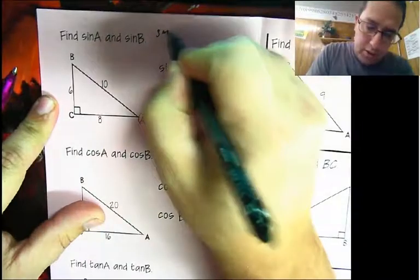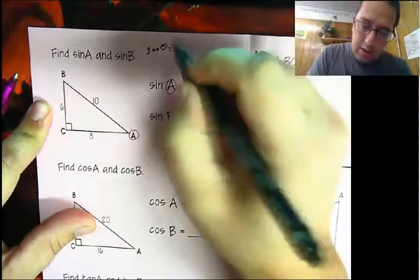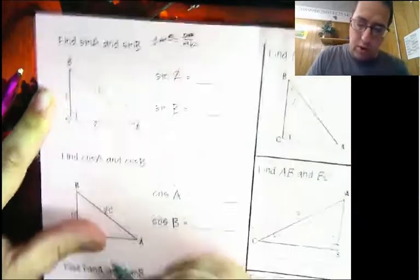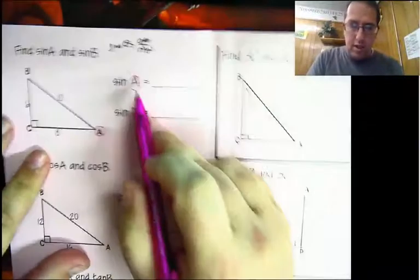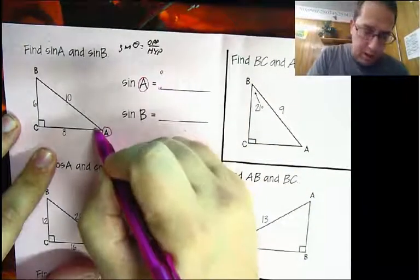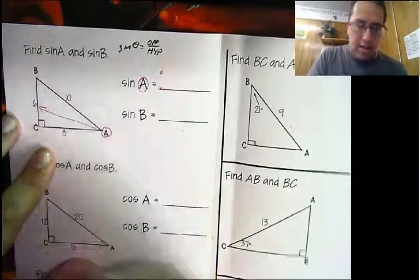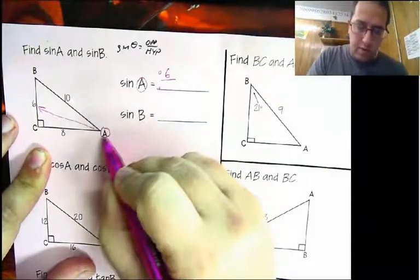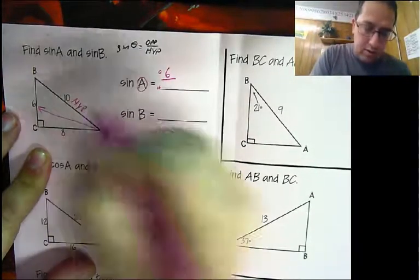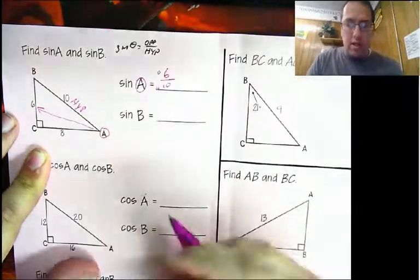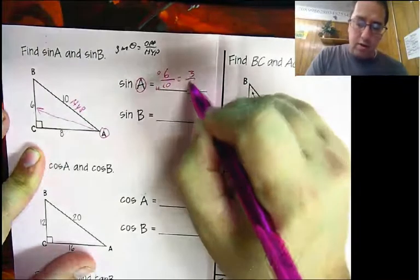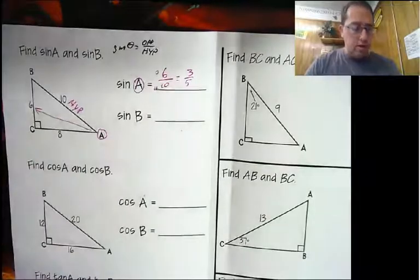Let's start with angle A. Remember, sine of some angle is equal to opposite over hypotenuse. Sine of angle A — I need opposite over hypotenuse. The opposite of A, all the way across, is 6, over the hypotenuse of the triangle, which is 10. So the sine of angle A is 6 over 10. You always want to simplify, so this would be 3 fifths.